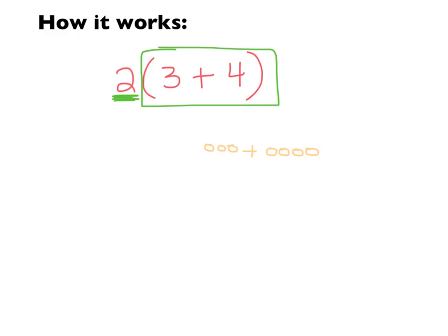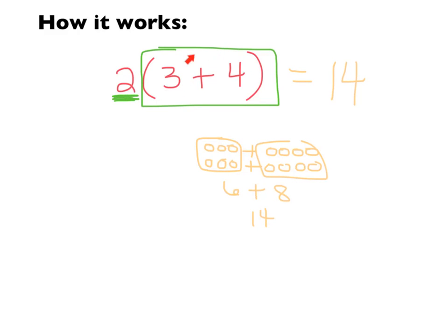It says I have 2 groups of that, so I'm going to draw another 3 plus 4. You can see a 3+4 and another 3+4. So I want to know the total — it looks like I have 6 here plus 8, which is 14. So this whole thing equals 14, and I showed that by drawing a picture — 2 groups of everything inside.